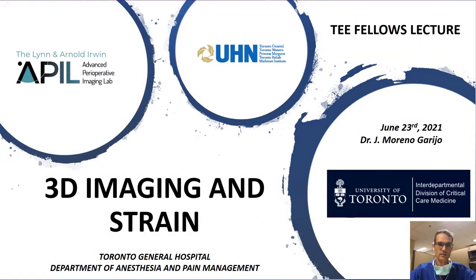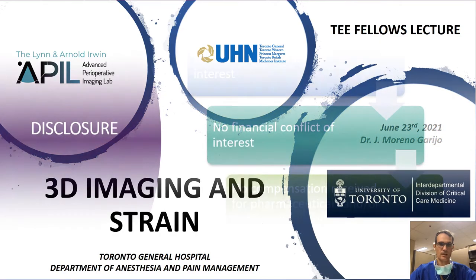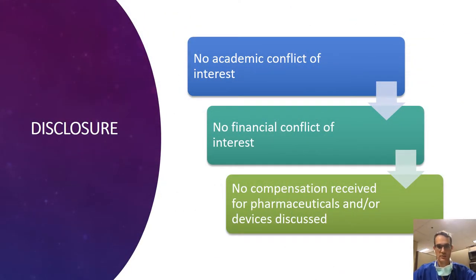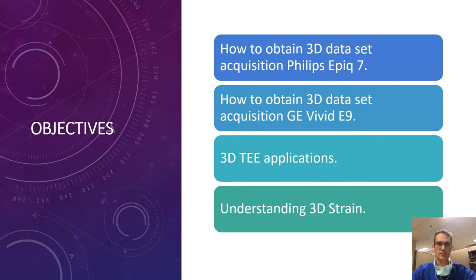Good evening, everyone. We are presenting these lectures for the TE Fellows Lectures as part of the National Board of ECHO exam preparation for the advanced PTE. We are going to be talking about 3D imaging and strain today for the 23rd of June 2021. The brief of these lectures is going to be how to obtain a 3D dataset on a Philips Epic Q7 or a GE Vivid E9, the applications we can do with those 3D images, and we are going to understand a little bit about strain.